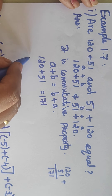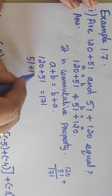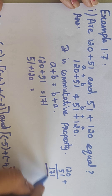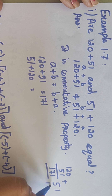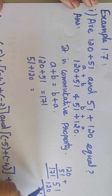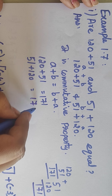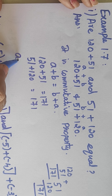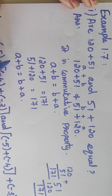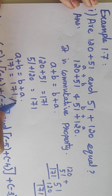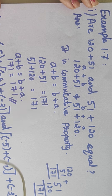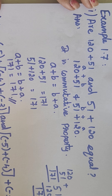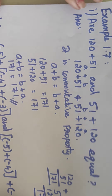Next we are going to take this side. This is 51 plus 120. Add it — 51 plus 120 equals 171. When we add both sides, we get the A plus B equals B plus A format, that is 171 equals 171. So both sides are equal and it comes under commutative property.